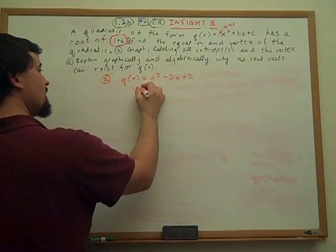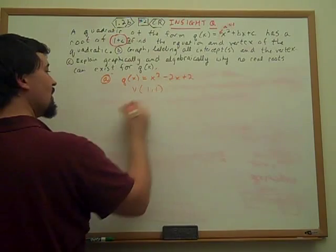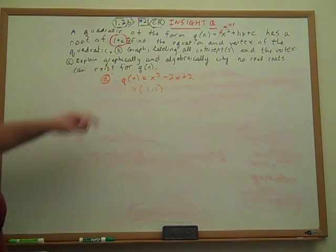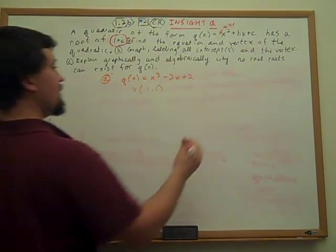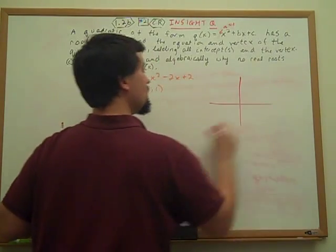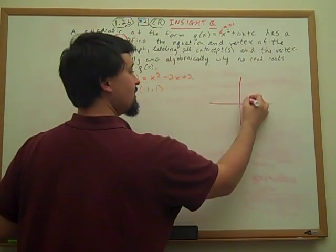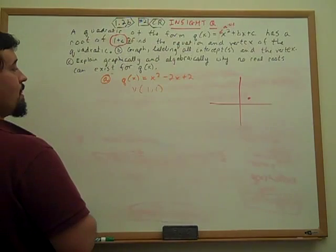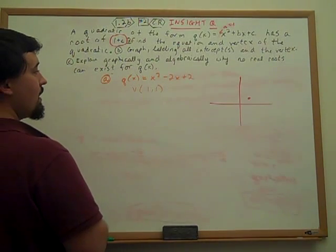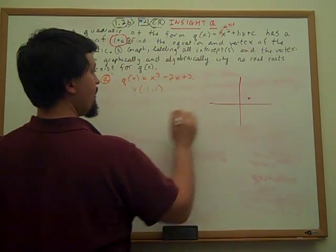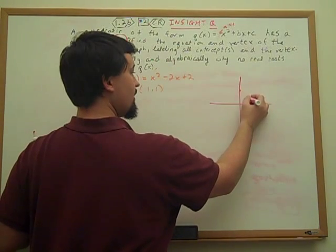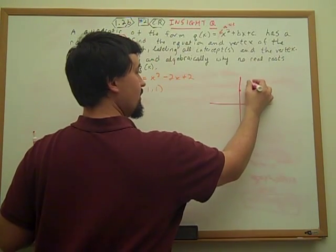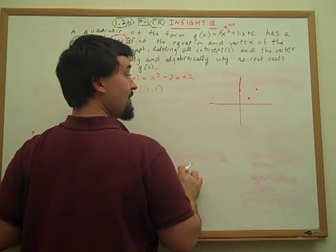Now for part B, graph: 1,1 is our vertex, and from there our y-intercept is 2, so we went over one up one. You can use the symmetry of the graph to graph that third point.